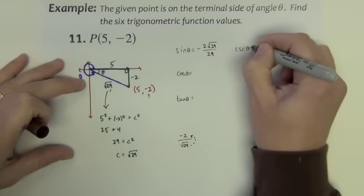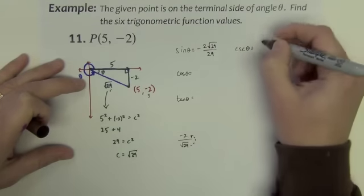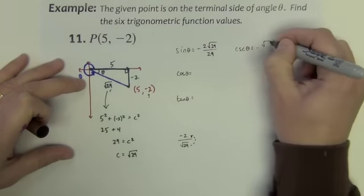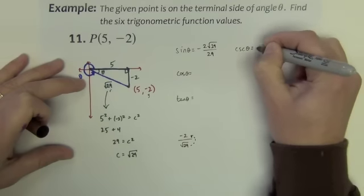While we're at it, let's get the cosecant because it's just this one flipped over. Negative square root of 29 over 2.